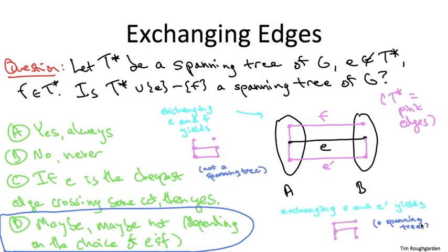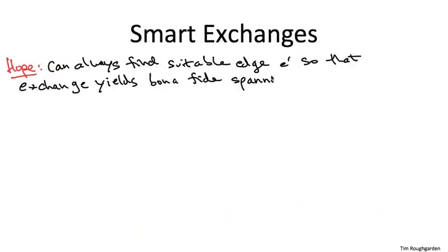So what have we learned? What we've learned is that if we want to execute this exchange argument, we cannot blithely exchange with any edge of T star that crosses this cut. So the best case scenario, so what we're hoping is true, that we can always find some suitable edge, like E prime on the previous slide, so that when we execute this swap, we do in fact get a spanning tree. And I'm happy to report that we can indeed always do this. So what I need to explain is the procedure by which we exhibit this edge E prime, which doesn't get us into trouble when we swap, which still gives us a spanning tree after the swap.